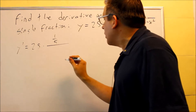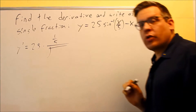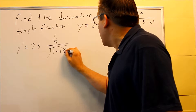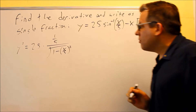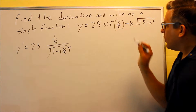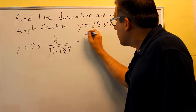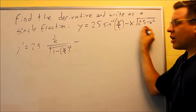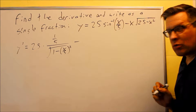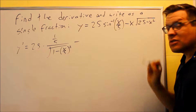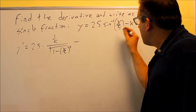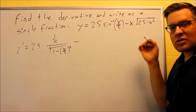On the bottom we have the square root of 1 minus u squared, so 1 minus (x/5) squared. We also have a factor of 25 out front, so that first part is complete. We have a minus sign, and this next part — because you have two things multiplied together — requires a product rule, and the second piece is going to involve the chain rule.